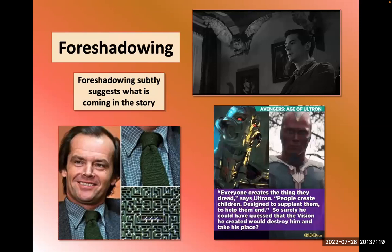Foreshadowing subtly suggests what is coming in the story. In Psycho, the antagonist stuffs birds — we see a creepy scene hinting he will be a murderer. In Avengers: Age of Ultron, Ultron says 'People create children designed to supplant them — to help them end,' and of course he gives birth to Vision in the film. In The Shining, a toy car mimics the maze in which the character will find his demise.